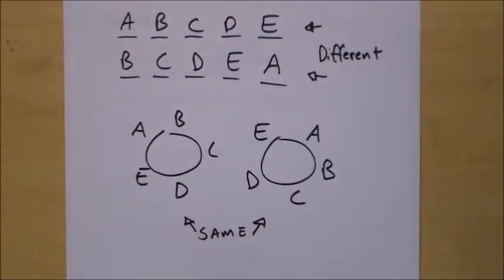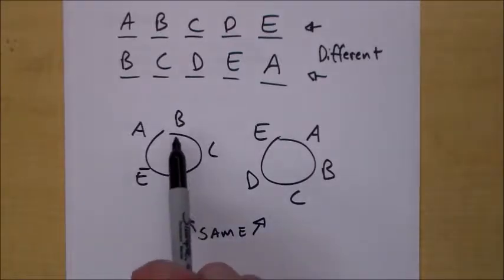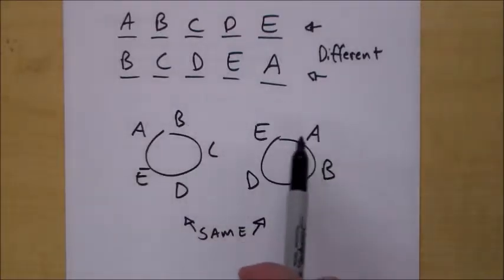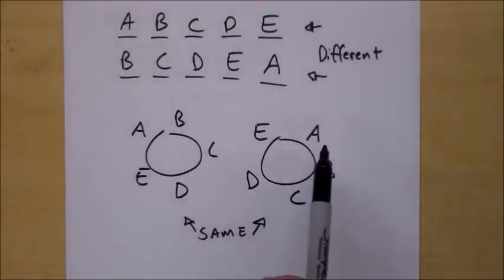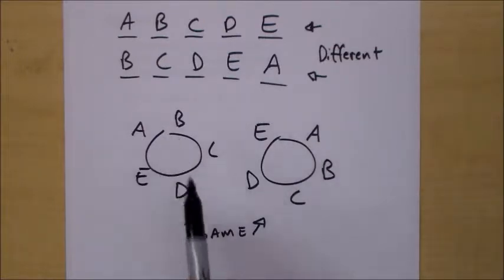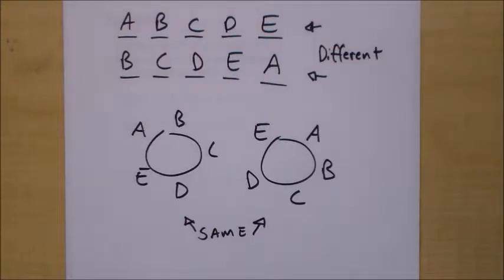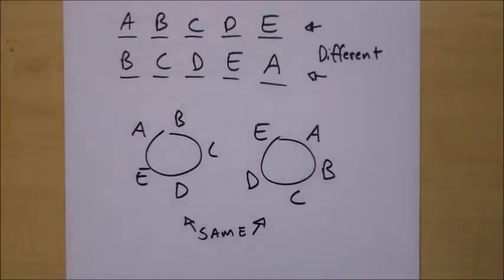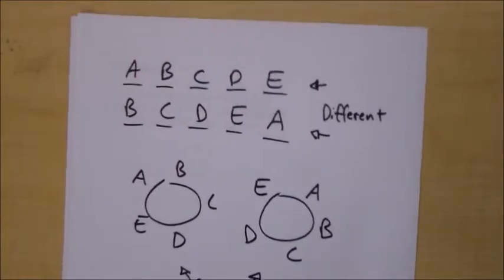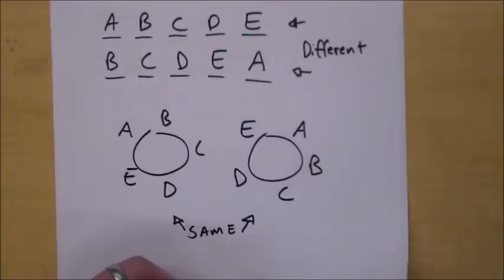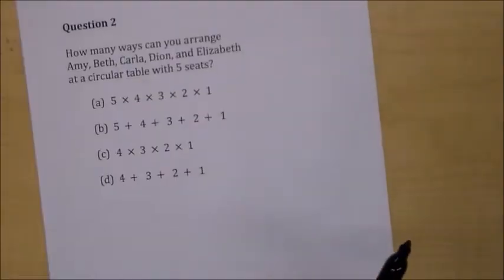But what happens when we have a circular table? At a circular table, if you shift everybody one space over, A is still next to E and B — it's all the same, so they're considered the same arrangement. In math terms, or on the SHSAT, the term 'circular table' means you have to do something different to get the right answer.